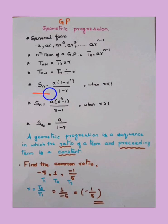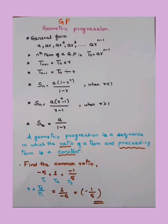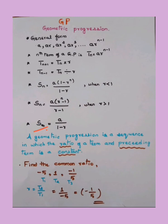To calculate Sₙ, the sum of n terms: when r < 1, use Sₙ = a(1 − rⁿ) / (1 − r). When r > 1, use Sₙ = a(rⁿ − 1) / (r − 1). A trick to remember: whichever is greater comes first in both numerator and denominator. For the sum of infinite terms: S∞ = a / (1 − r).